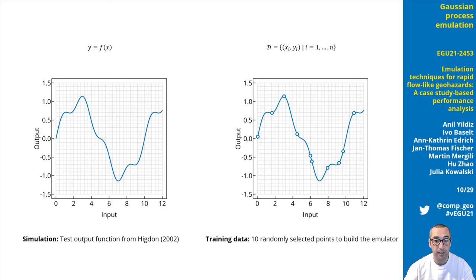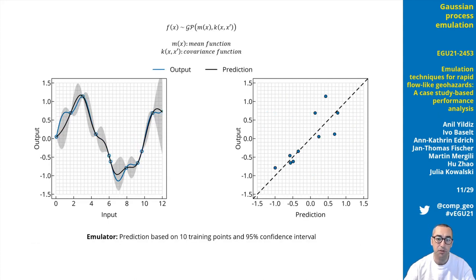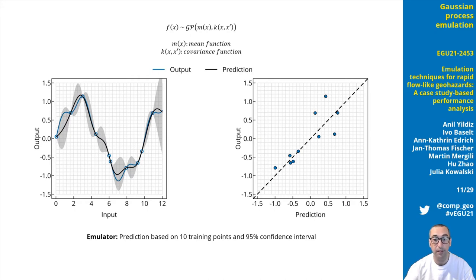Let's see how it works. Here is an example of an output y as a function of x in the figure on the left-hand side. Assume that we have a design matrix consisting of 10 randomly selected points of x and the output y. We will build the emulator using these points. In simplest terms, we need a mean function and a covariance function to build the emulator and make predictions using it. We can see the predicted output function with the solid black line and the original output function with the solid blue line.